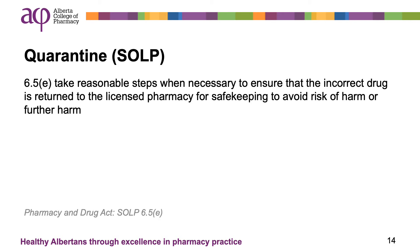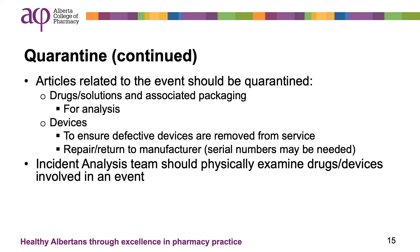As part of the immediate measures in responding to a drug incident, SOLP 6.5e discusses the necessity to ensure return of the incorrect drug to the pharmacy. Having the prescription returned to the pharmacy provides an opportunity to confirm the error and ensure that no one will inadvertently access the incorrect medication. Often, looking at products and devices involved in an error may help in understanding how the error was made. If devices are involved, it is crucial to ensure they cannot be used again until they have been tested to ensure they are functioning correctly.